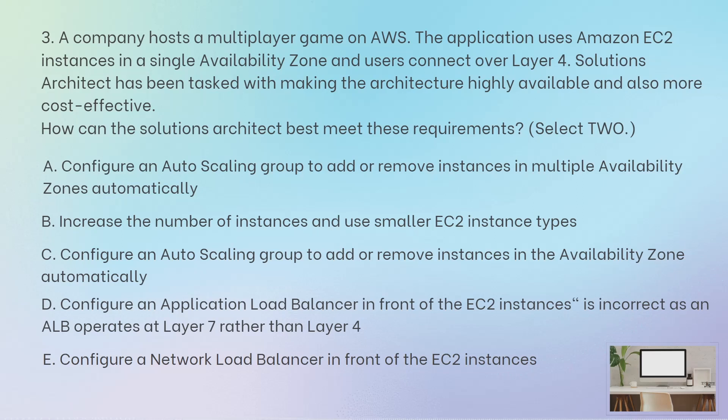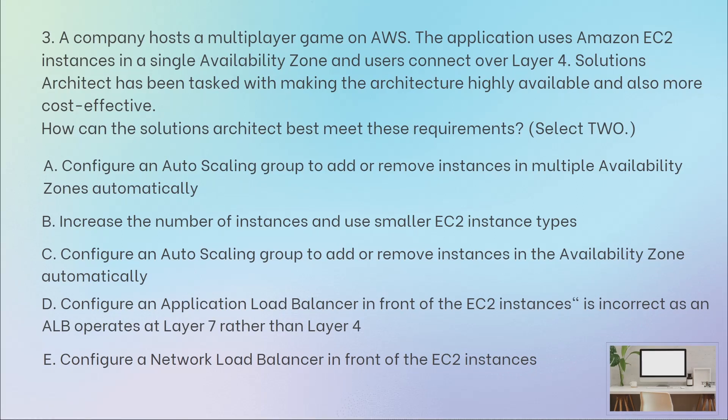Option A: Configure an Auto Scaling group to add or remove instances in multiple Availability Zones automatically. You can create an Auto Scaling group of EC2 instances so that it can add and remove instances across multiple AZs. This is one of the correct answers.